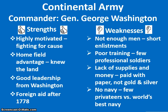Anytime you have a war you want to look at the two sides, so we're going to start with the Continental Army under the command of General George Washington. The Continental Army had several strengths: they were highly motivated because they were fighting for their cause — in this case, independence. They had the home field advantage; this was their home and they knew the land. They had a good leader in General George Washington. And after 1778 we're going to see the influence of foreign aid and how that changed the outcome of the war.